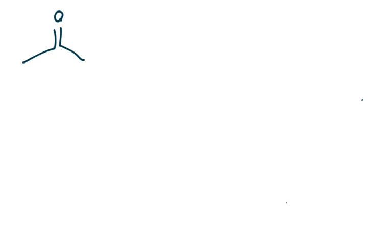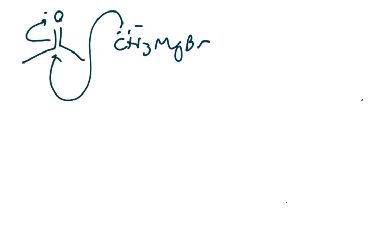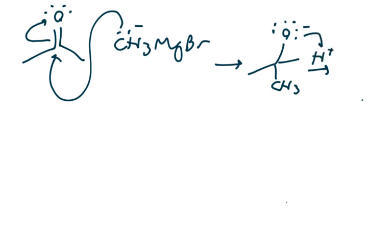Now what happens if we have a ketone? I'm going to use acetone, the simplest ketone. We react it with our Grignard reagent — the nucleophile attacks that carbonyl carbon, the pi bond electrons pop out, and we get an O minus intermediate. After protonation, we get a tertiary alcohol, because the central carbon bearing the OH is now bonded to three other carbons. So that's how we react with aldehydes and ketones.